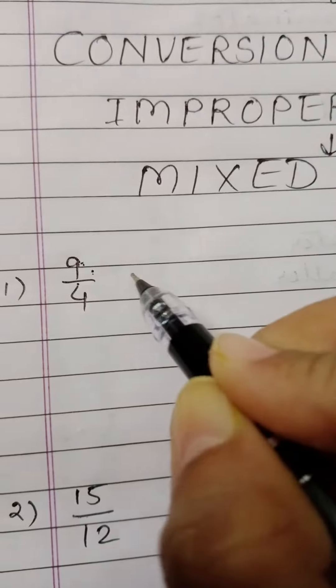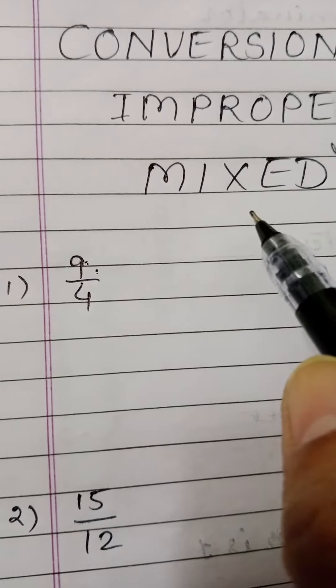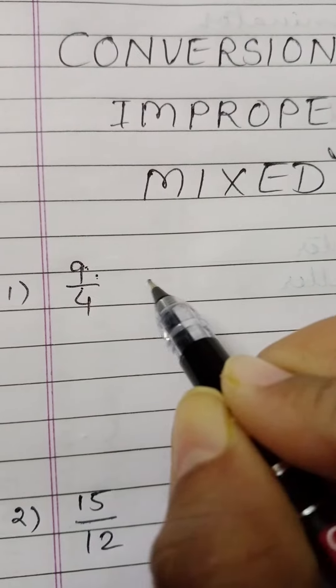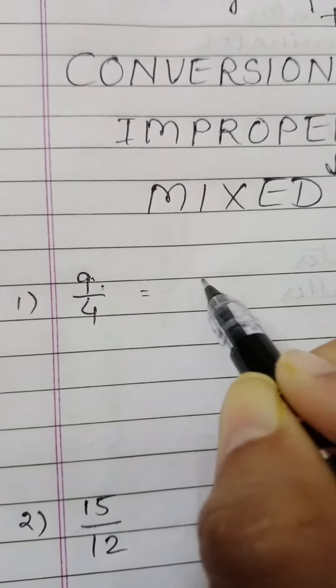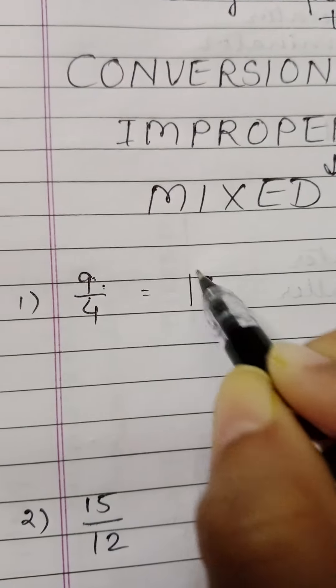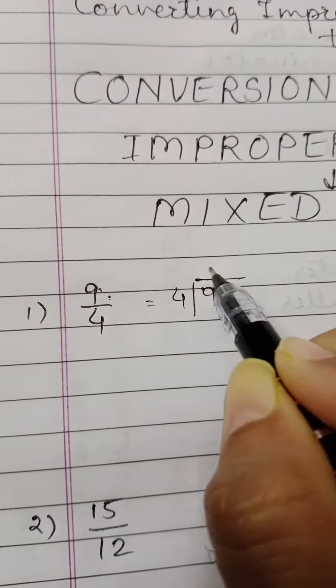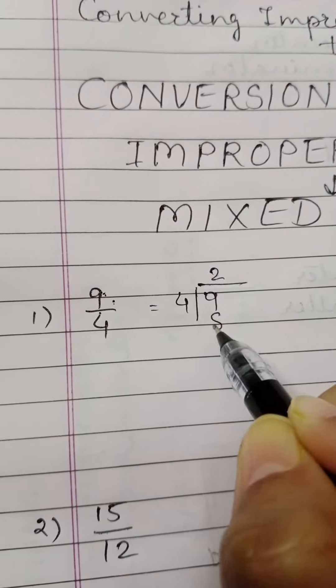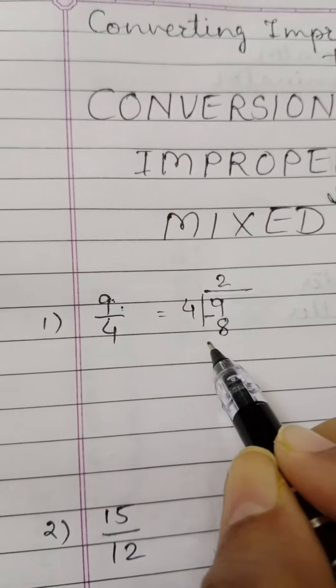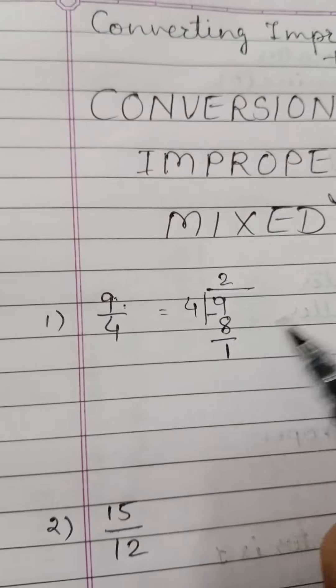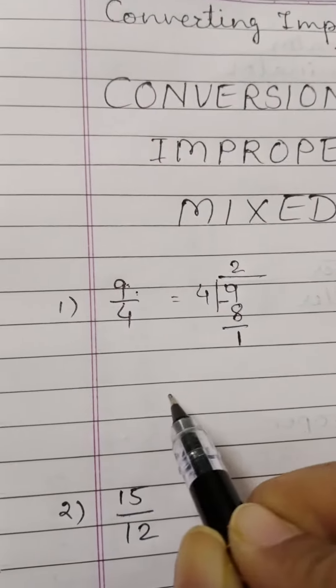This is 9 upon 4. Now this 9 upon 4 is an improper fraction. I want to convert it into mixed fraction. What will I do? I will divide this 9 by 4. So 4, 2's are 8 and here 9 minus 8 is 1. So how will I write this?